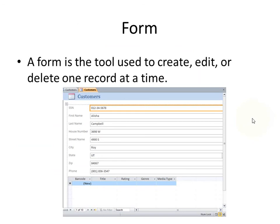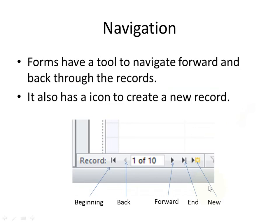A form is a tool that we use to create, edit, or delete one record at a time. So instead of seeing them all at once, we're only going to see one record at a time. There are different fields for you to fill in, edit, and delete. Down at the bottom you also have navigation — little arrows where you can see you're at one of ten records. You have a beginning, you can go to the end of the database, you can go forward and backwards. There's also a new one — you click on that and it gives you a blank form so you can enter in a new record.